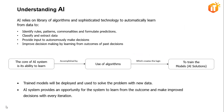Specifically, artificial intelligence relies on a library of algorithms and sophisticated technology to automatically learn from data, to identify rules, patterns, commonalities, and formulate predictions. It can help classify and extract data, provide input to decision-making or autonomously make decisions, and it also helps improve decision-making by learning from the outcomes of past decisions.